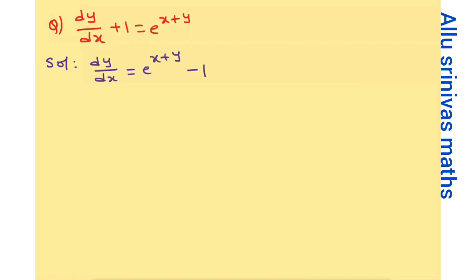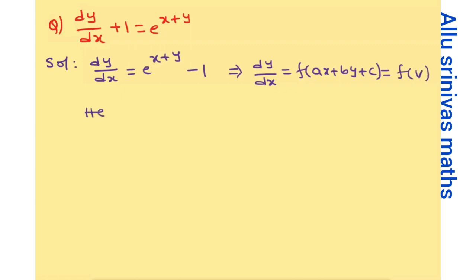dy/dx equals f of (ax plus by plus c) formula. So comparing f of (ax plus by plus c) equals f of v, we identify a value is 1 and b value is 1. Let's do a shortcut here: a equals 1 and b equals 1.